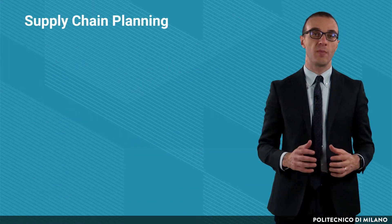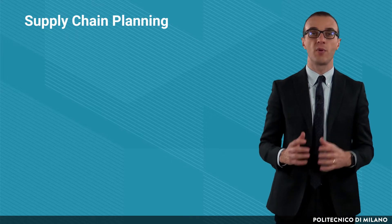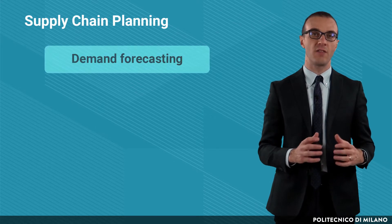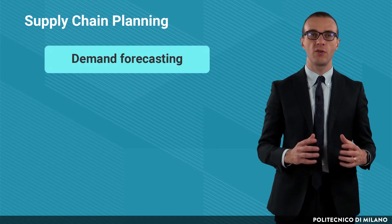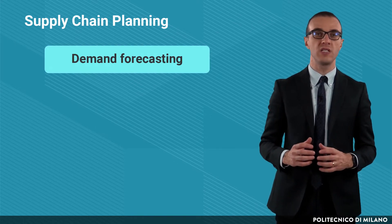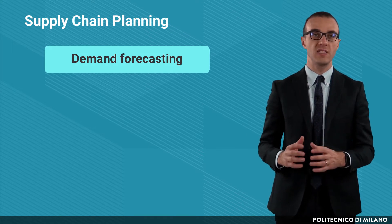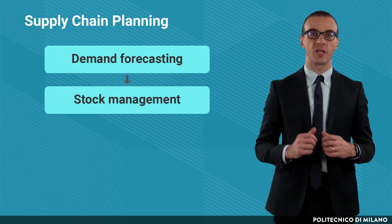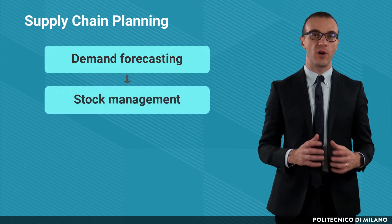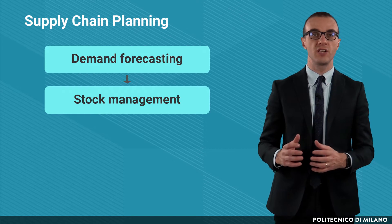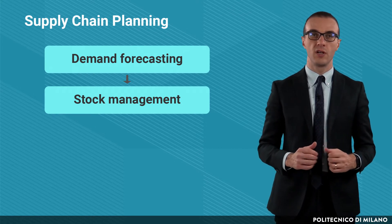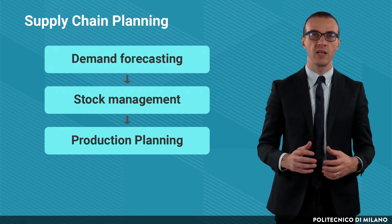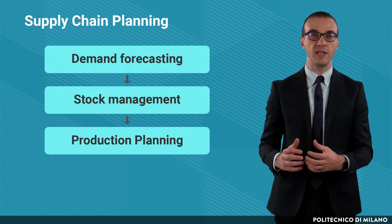For what supply chain planning is concerned, four main points will be tackled during this course. First, demand forecasting — we will go through the demand forecasting process and we will see the forecasting models based on the analysis of the time series. Second, stock management — we will see the typologies of inventories and the main models to manage them. Third, production planning — we will deepen the principles of production planning and the models to deal with aggregated production.